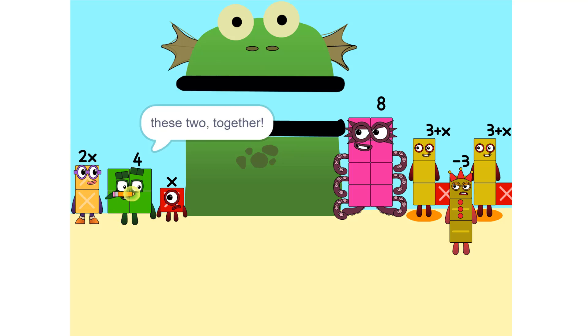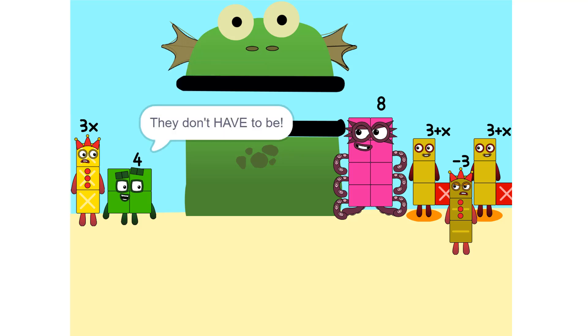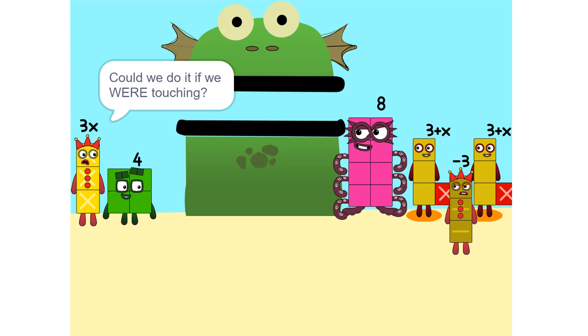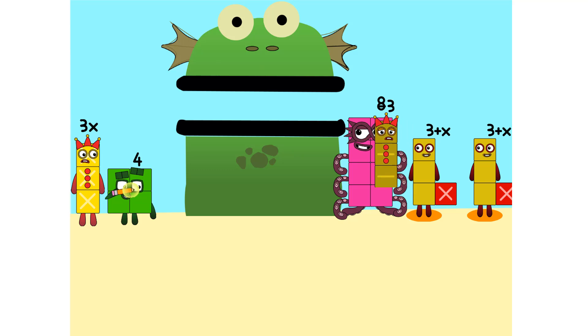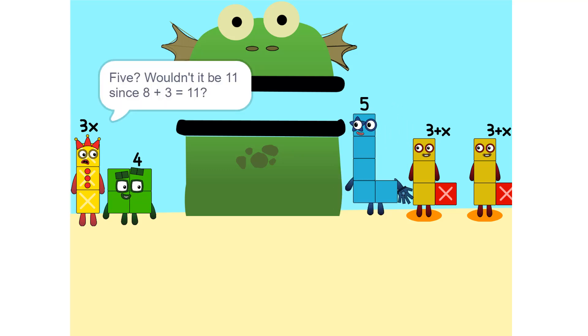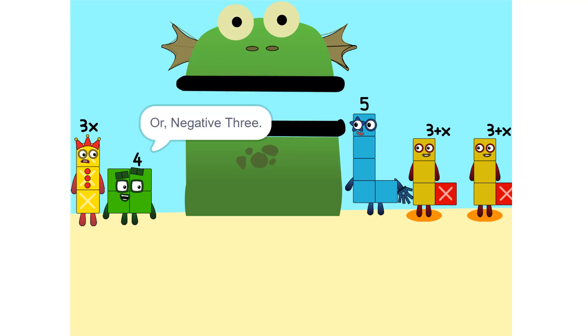One thing we can do is add these two together. How did you do that? We weren't even touching. They don't have to be. Could we do it if we were touching? Yeah. We can also add these together. 5. Wouldn't it be 11 since 8 plus 3 is 11? No, because we're adding together 8 and minus 3, or negative 3, so it's 5.